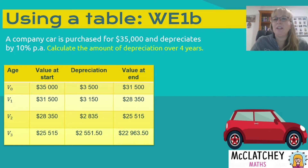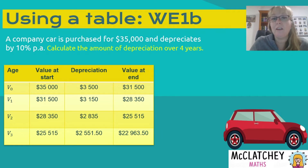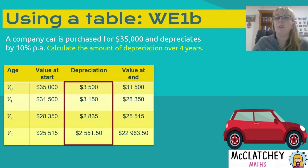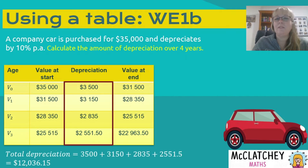The next part of the question asks how much the asset depreciated over four years. We simply add up the depreciation column — all four numbers together give us $12,036.15 worth of depreciation.